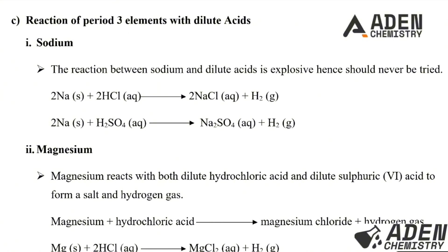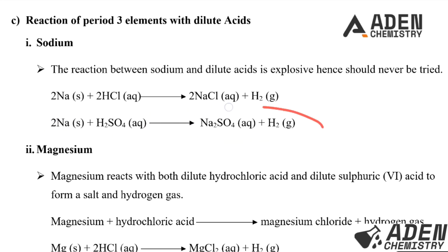Although we are told you should never attempt it, the reaction of sodium metal with hydrochloric acid gives sodium chloride and hydrogen gas, balanced as: 2Na + 2HCl → 2NaCl + H₂. Sodium reacting with sulfuric acid gives sodium sulfate and hydrogen gas, balanced by placing a coefficient of 2 on the sodium side: 2Na + H₂SO₄ → Na₂SO₄ + H₂.